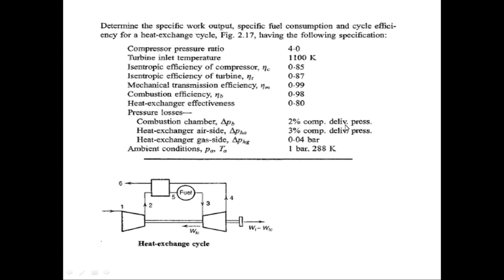The pressure losses in the combustion chamber are assumed to be two percent of the compressor delivery pressure. At the heat exchanger air side, these are given as three percent of the compressor delivery pressure. At the heat exchanger gas side, the pressure loss is 0.04 bar. The ambient conditions are 1 bar and 288 Kelvin.